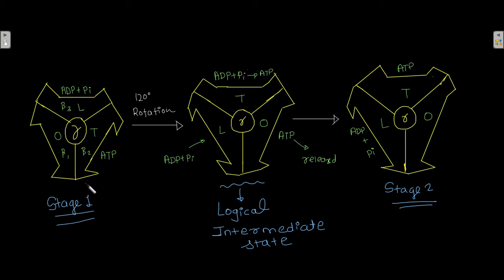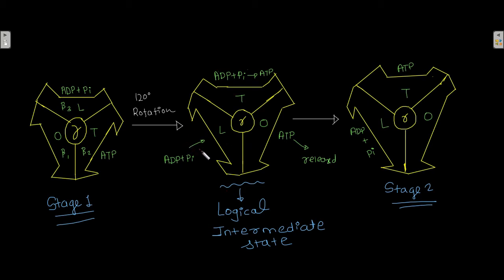From stage one, the system moves into the logical intermediate state by rotation of the gamma subunit by 120 degrees. When this rotation occurs, the L state is converted to T state, the T state is converted to O state, and the O state is converted to L state. In this intermediate state, the L state can accept a new ADP and Pi pair.